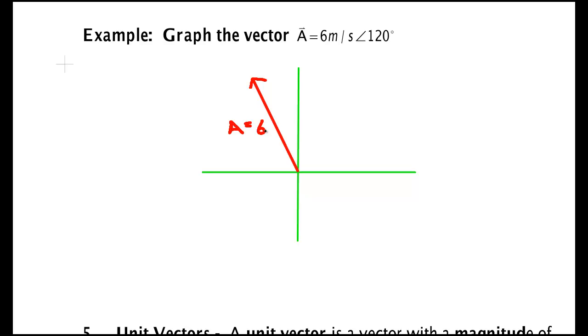This right here is the magnitude of A, and the magnitude of A is 6 meters per second. Notice the units go with the magnitude. The overall vector would of course have an arrow over it. This angle all the way back over to here is 120 degrees where this is the x-axis and this is the y-axis.